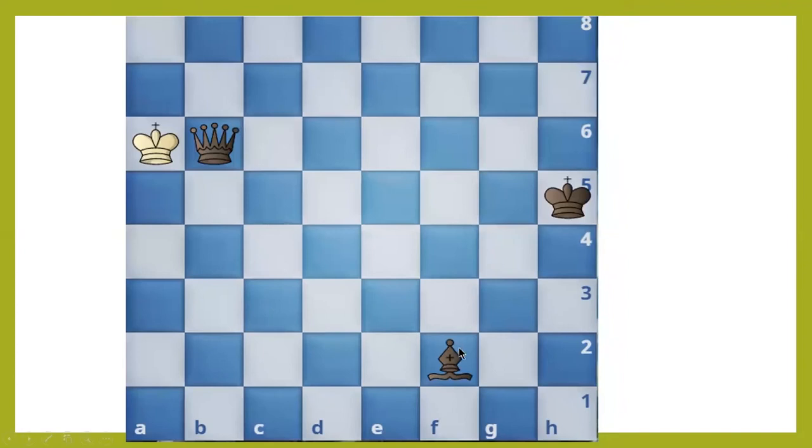In that condition, black has checkmated by the support of a minor piece, bishop. He moved his queen to that square by which he can checkmate white's king.